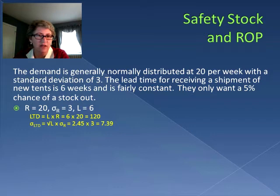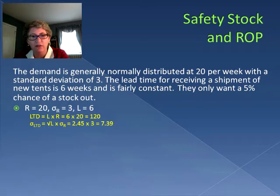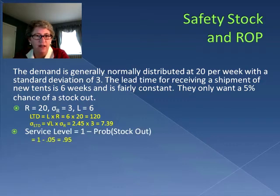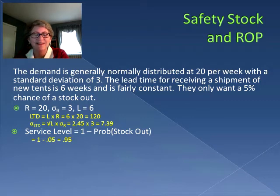Next, we calculate the standard deviation of the lead time demand. Since variability is only in the demand, we take the square root of the lead time and multiply it by the standard deviation of demand. The square root of 6 is 2.45, multiplied by the standard deviation of 3, giving us 7.39. Our service level is 1 minus the probability of a stock out, so a 5 percent stock out probability gives us a 95 percent service level.